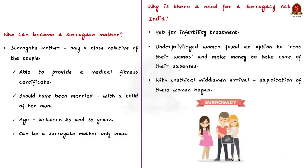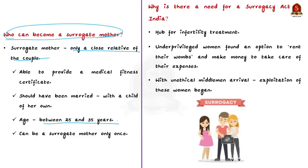Now, who can become a surrogate mother? Only a close relative of the couple can be a surrogate mother. She must provide a medical fitness certificate, must have been married with a child of her own, and must be between 25 and 35 years. She can be a surrogate mother only once.